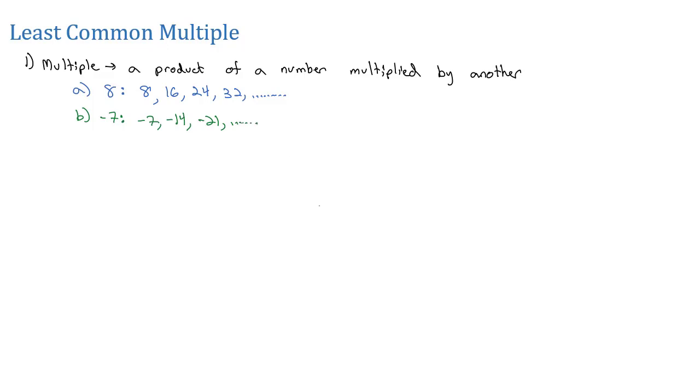And actually, we could even multiply these by negative numbers, so negative 16 is a multiple of 8 as well. Multiples are just any product of a number multiplied with another one. And since there's a lot of them, we're interested particularly in what is called the least common multiple.